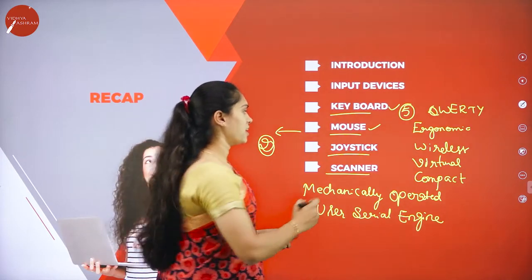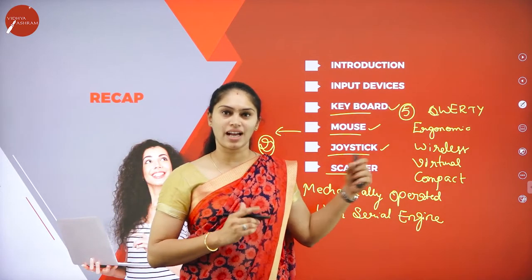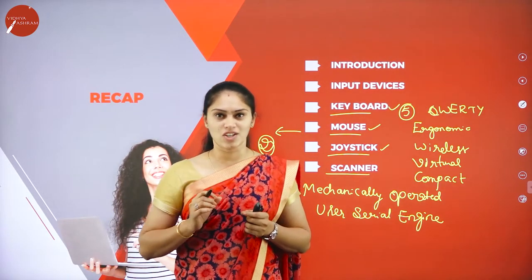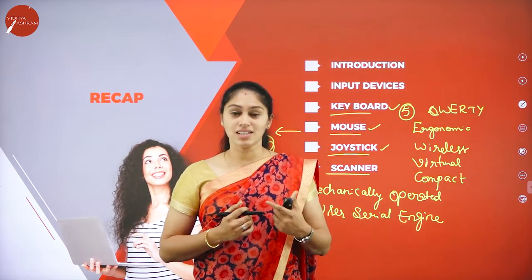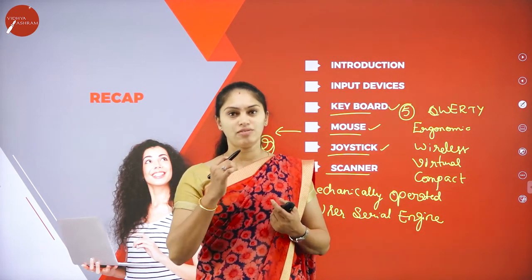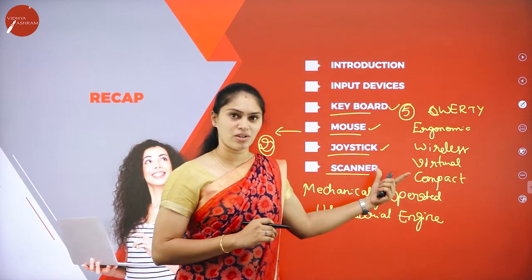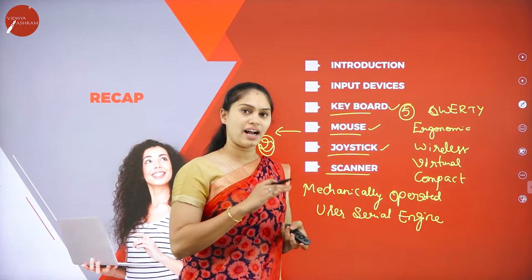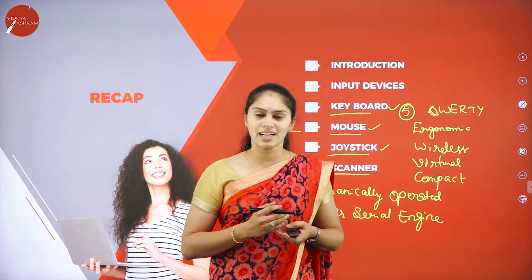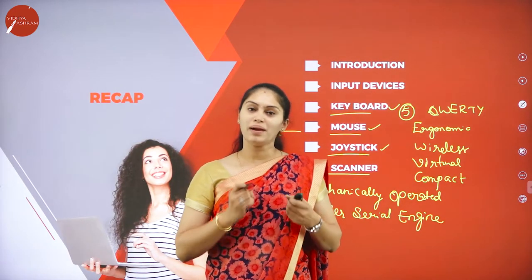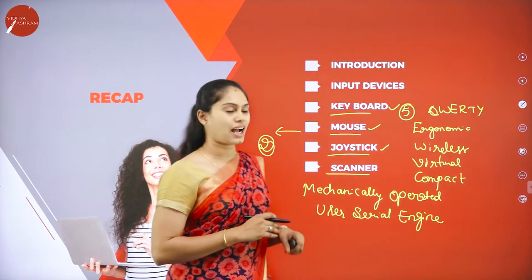When it comes to the joystick, it has a pivot that can be moved in four directions, and based on that direction it takes input from the user. When it comes to the scanner, it is an input device where we give a hard copy or paper as input. It reads the data from that hard copy and converts it into digital form.